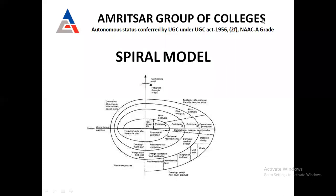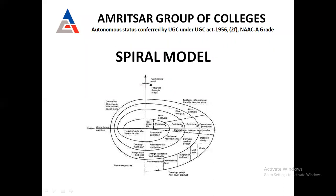Good afternoon students. Today's topic is the software development model called the Spiral Model. We will discuss how we can develop software by making one, two, three, four spirals. In the diagram, you can see there are four spirals, and after completion of four spirals, the software is ready.